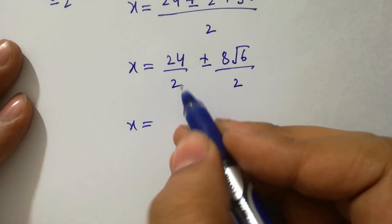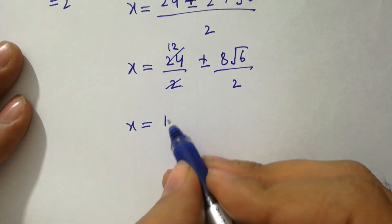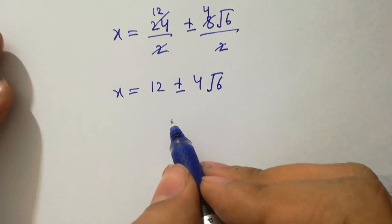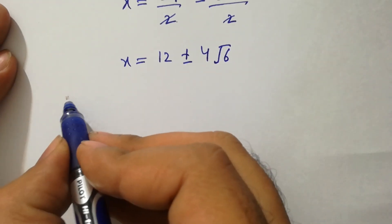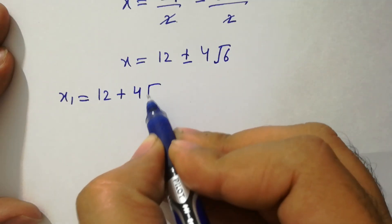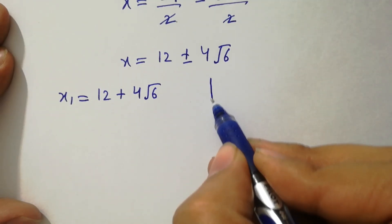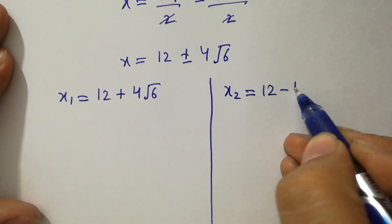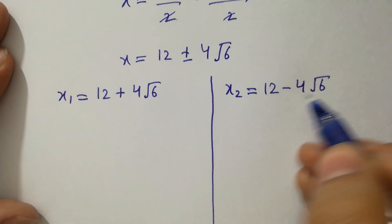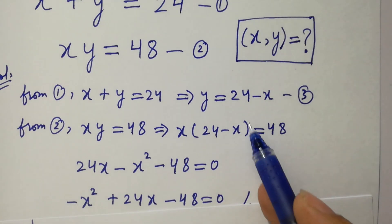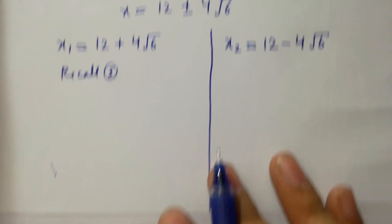So the two values of x are: x1 equal to 12 plus 4 square root of 6, and x2 equal to 12 minus 4 square root of 6. Now recall the third equation y equal to 24 minus x to find the values of y.